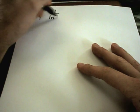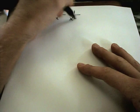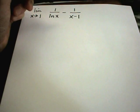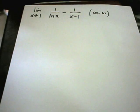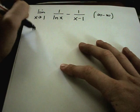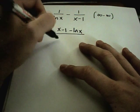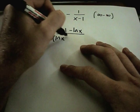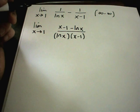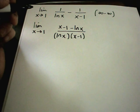Let's do one more. The limit as x approaches 1 of 1 over ln(x) minus 1 over (x minus 1). Since ln(1) is 0, you're getting 1 over 0 minus 1 over 0, which you can think of as infinity minus infinity. When you have fractions floating around, a good idea is to get common denominators. So I'll have x minus 1 minus ln(x) in the numerator, and ln(x) times (x minus 1) in the denominator. This is going to be a little tedious, but that's okay.